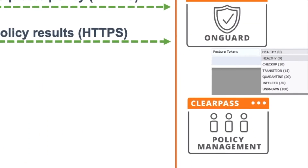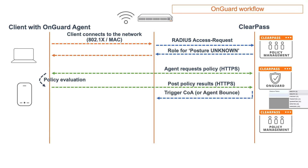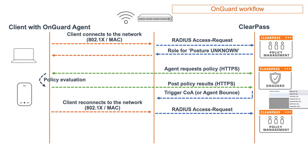The posture token can be healthy, it can be infected or quarantined — those are the ones that are mostly used. But a token will stay at the ClearPass server, and after that ClearPass will respond. It can either trigger a COA, so it can do a port bounce, or it can do a disconnect client, or it can even directly trigger the role change, or it can do an agent bounce. In that case, the agent on the client will do a port bounce, so it will bring the port down and up from the agent side. And at that point there will be a new authentication, ClearPass then knows the token, and it can respond based on the token.